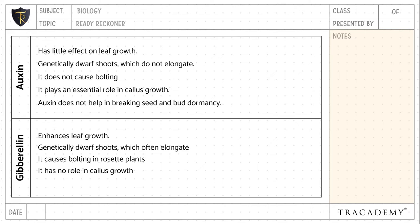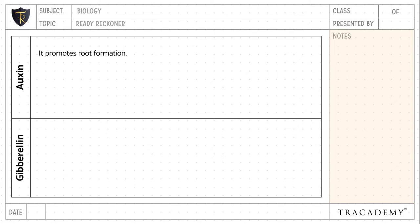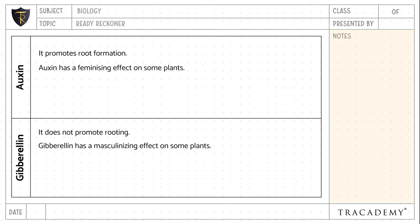Auxin does not help in breaking seed and bud dormancy, whereas gibberellin plays a major role in seed germination and breaking seed and bud dormancy. Auxin promotes root formation, whereas gibberellin does not promote rooting. Auxin has a feminizing effect on some plants, whereas gibberellin has a masculinizing effect on some plants.